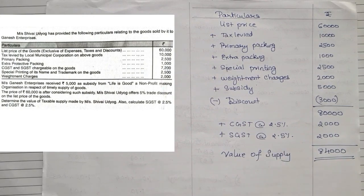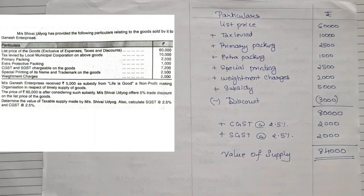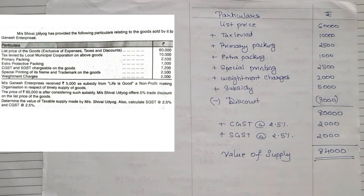These were the two different types of sums that can come under value of supply. One had the list price inclusive of GST; the other had the list price exclusive of GST. You can have sums with or without discount, but this is the format to remember. The sum is simple — you just need to understand what is included and what is not. I hope everyone has understood. With that, we end this video. Thank you.